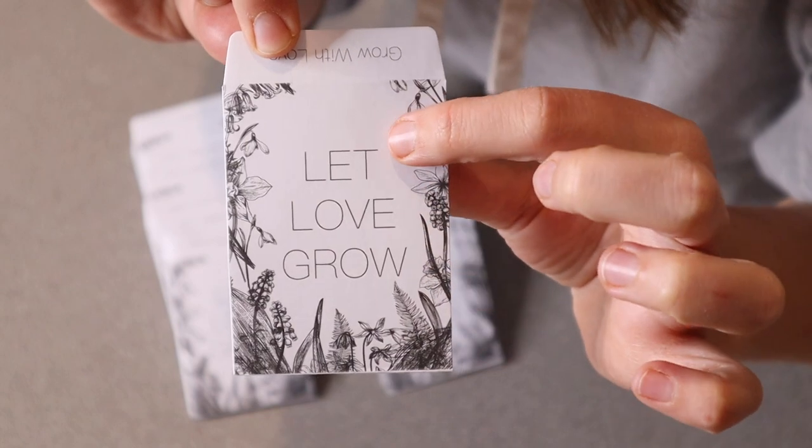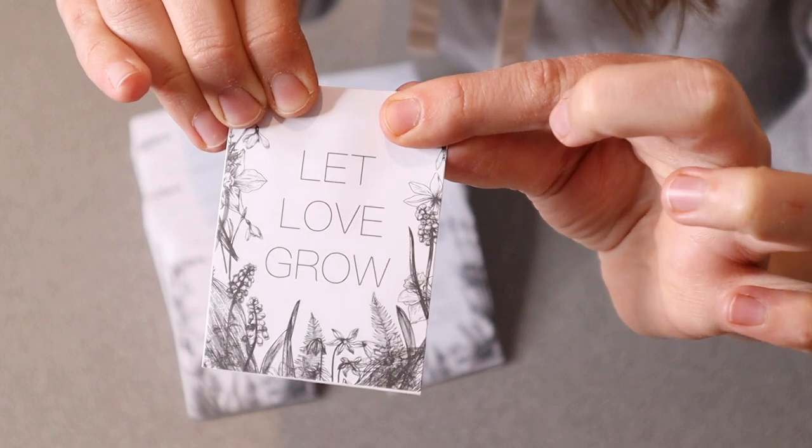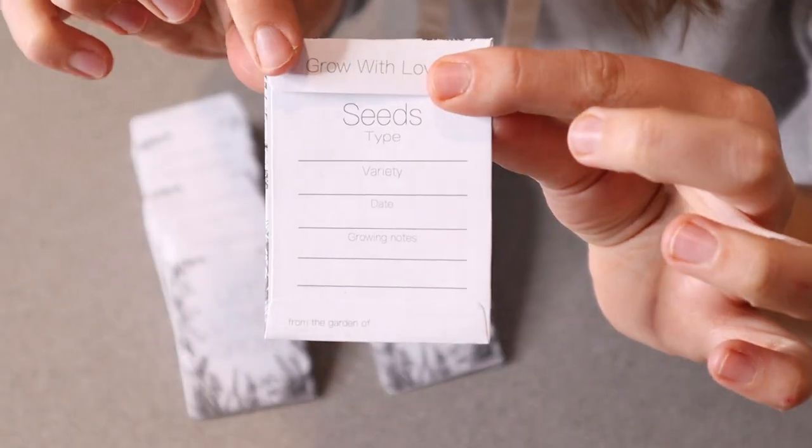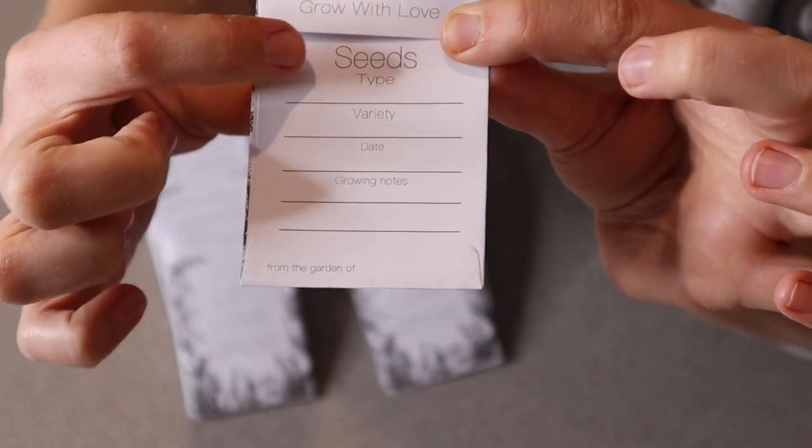So up close you can see on the front of each packet it says let love grow. And then when you have this folded over just like that, if you have it sealed, then when you flip it around it says grow with love seeds.